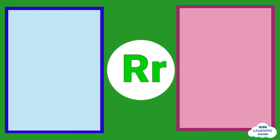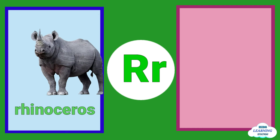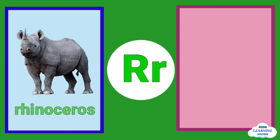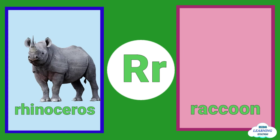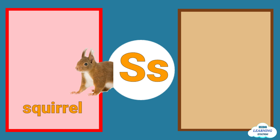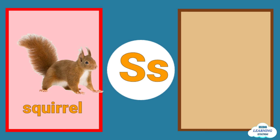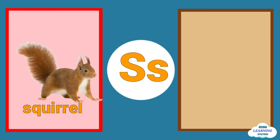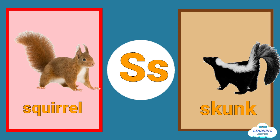R is for rhinoceros. R is for raccoon. S is for squirrel. S is for skunk.